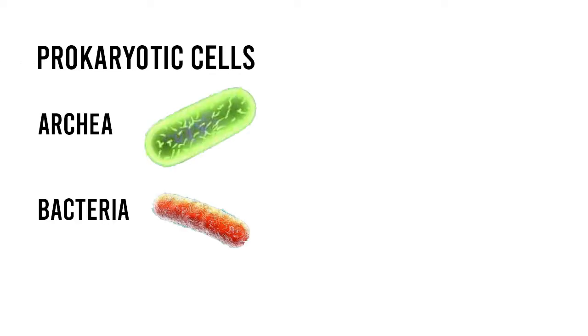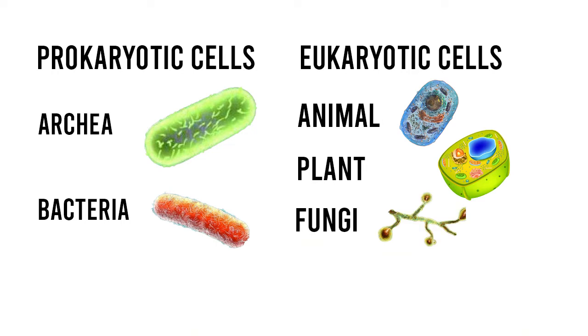The cells that you know and love are classified into two categories: prokaryotic cells, which include archaea and bacteria, and eukaryotic cells, which include animal and plant cells, fungi, and protists.